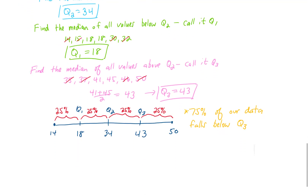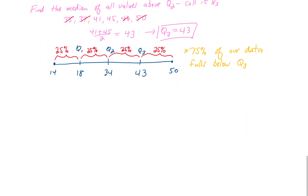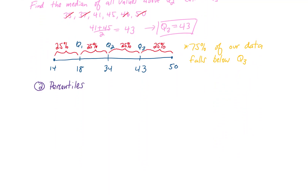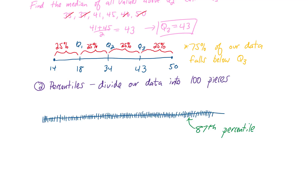Another way to do this is with percentiles. Percentiles take this concept of quartiles a bit further. Instead of dividing our data into four equal pieces, percentiles divide our data into 100 pieces.